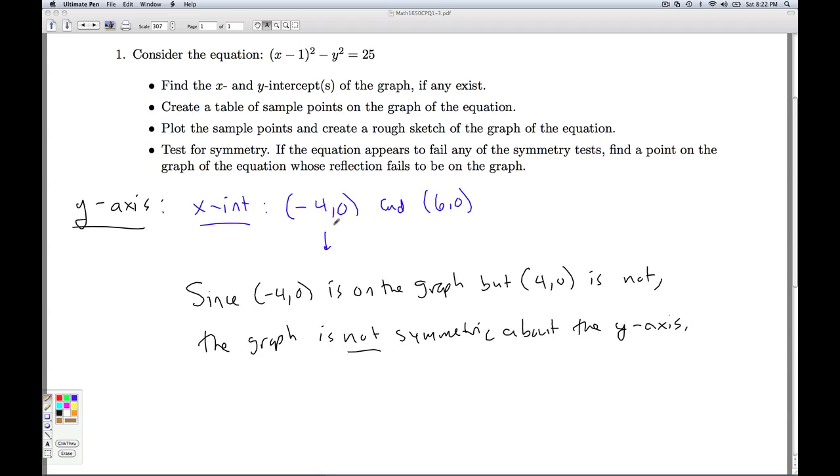And actually this same point will work for origin as well, because the point symmetric about, or excuse me, if I reflect the point negative four zero through the origin, I take the opposite of both the x- and the y-coordinates, while the opposite of negative four is four, and the opposite of zero still zero. And so this exact same point shows us it's also not symmetric about the origin. All right, so that'll do it for checkpoint quiz 1.3.